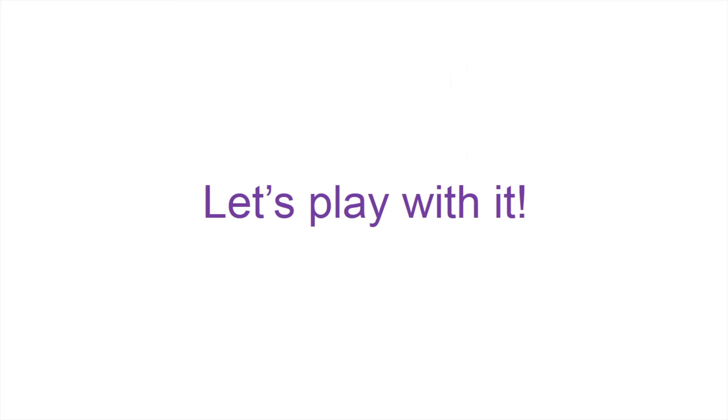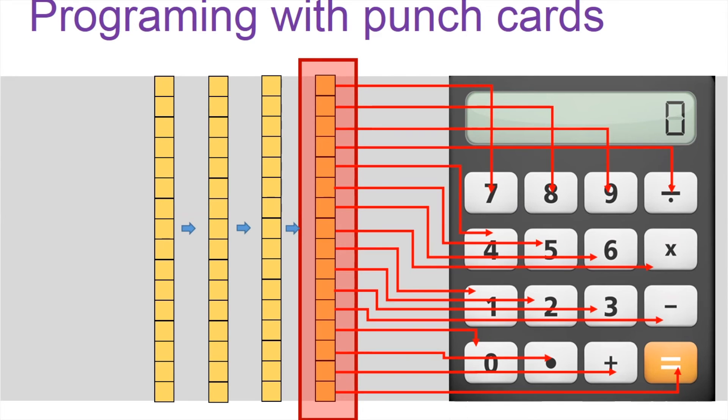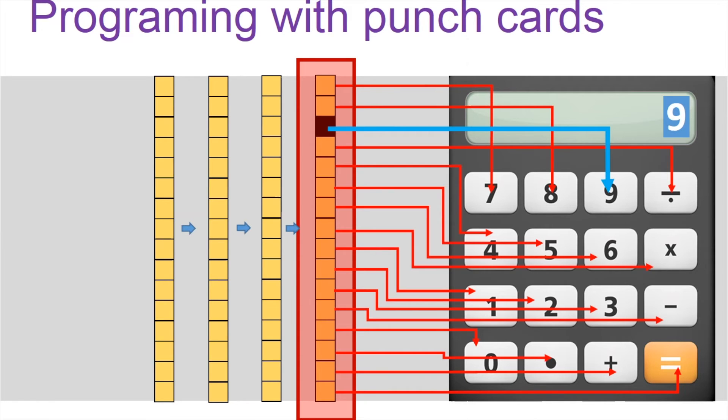Okay, rather than saying it, let's just play with it. This is an example. You can play by yourself. We have a punch card here and each of the holes is connected to one of the buttons of the calculator. In case you punch a hole there which is connected to the button of nine, the calculator will give you 9.